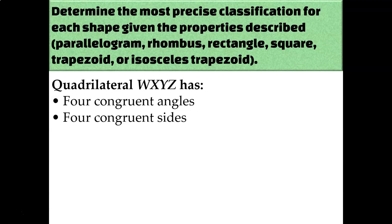Let's try something similar but without the picture — just a description of the characteristics. Quadrilateral WXYZ has four congruent angles and four congruent sides. That's a square. Remember, you have to give the most precise classification — you could say it's a parallelogram, a rhombus, or a rectangle, and all of those are technically correct, but since it has four congruent angles and four congruent sides, square is the best name we can give to that quadrilateral.